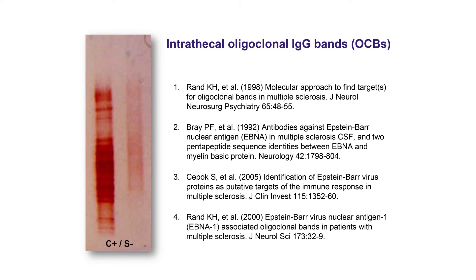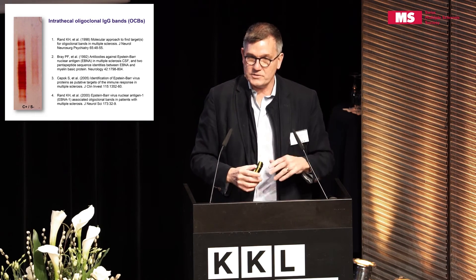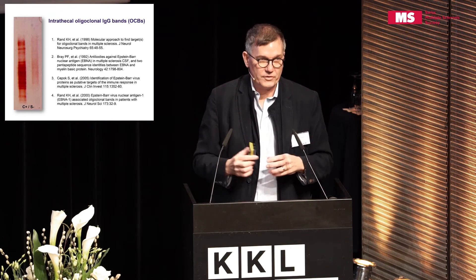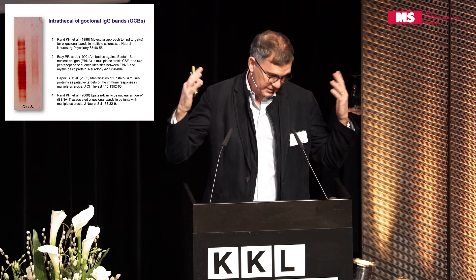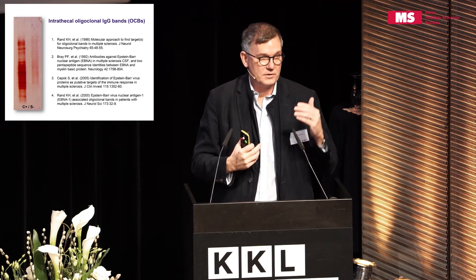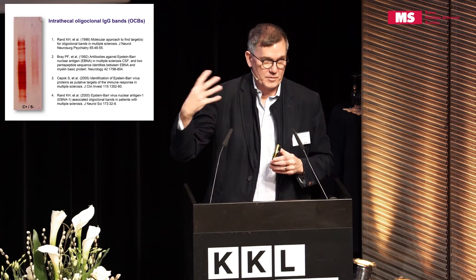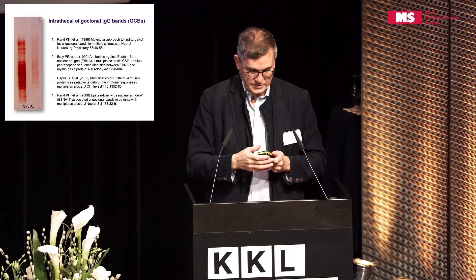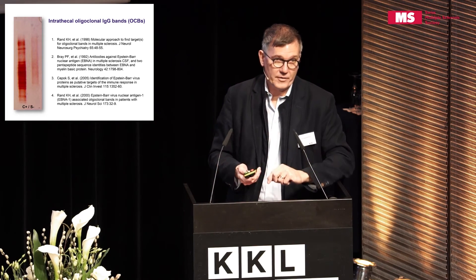Oligoclonal IgG bands are a pathognomonic feature of MS, and there has always been the hypothesis that if you find the cause of MS, these bands must bind to the causative agent. However, we have tried this many times using different techniques and cannot remove the oligoclonal IgG bands with EBV proteins. In my opinion, these bands are not targeting Epstein-Barr virus.